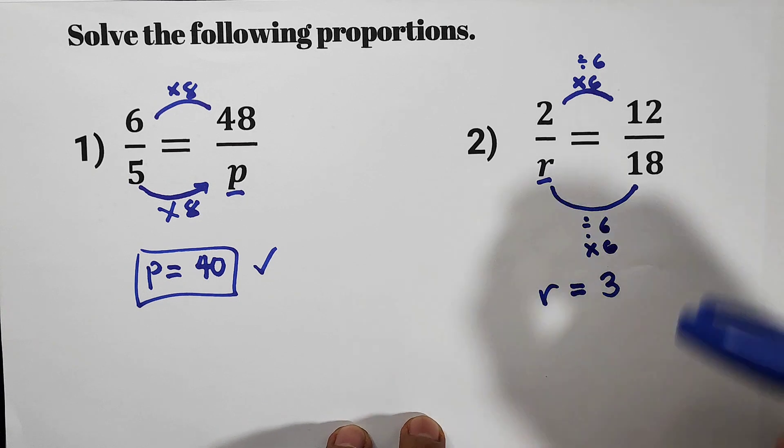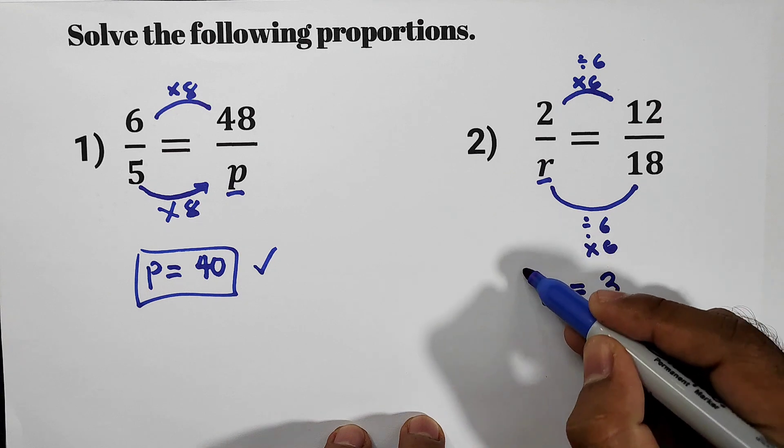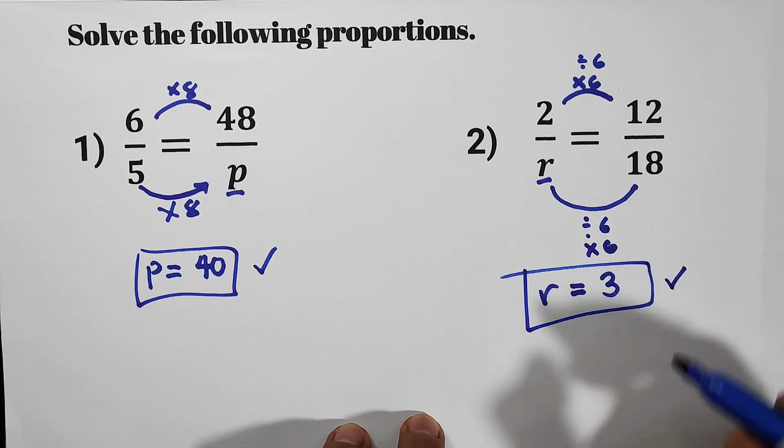Or 18 divide 6 is 3. Now, we can simplify 12 over 18 to 2 over 3. So R is equal to 3.